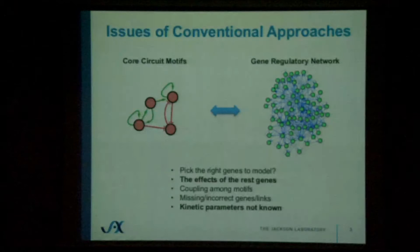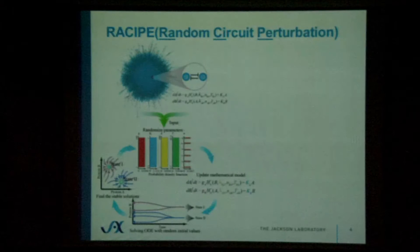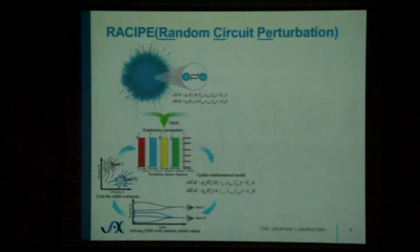To address these questions, we developed a new method called Random Circuit Perturbation, or RECIPE. Based on the assumption that a big network can be decomposed into two parts: a core that determines major functions, and peripheral genes that add redundancy to the core, making it more robust and modulating its signaling states. If we believe this scale separation, we can focus modeling on the core and consider the effects of other genes as a random perturbation to all connected parameters.